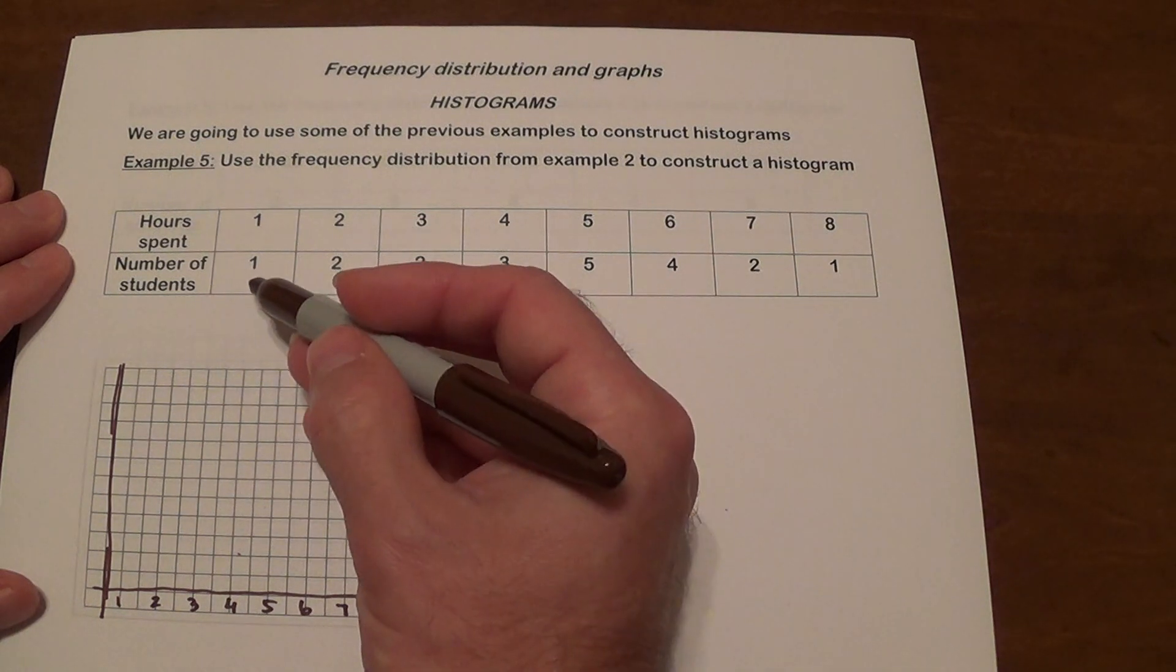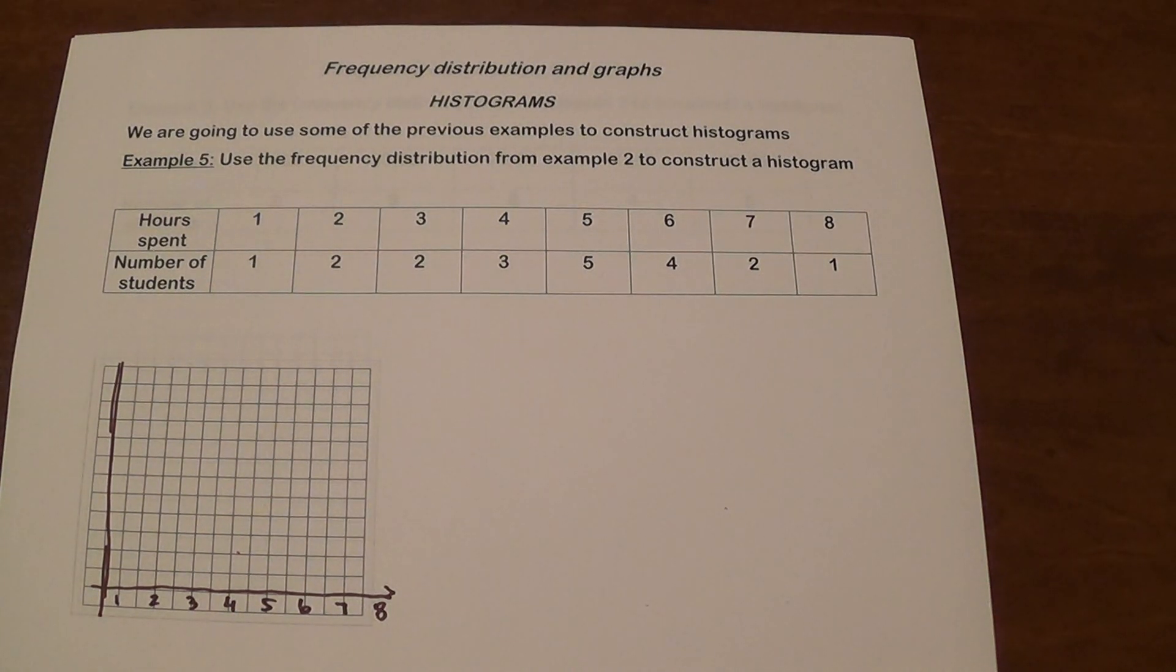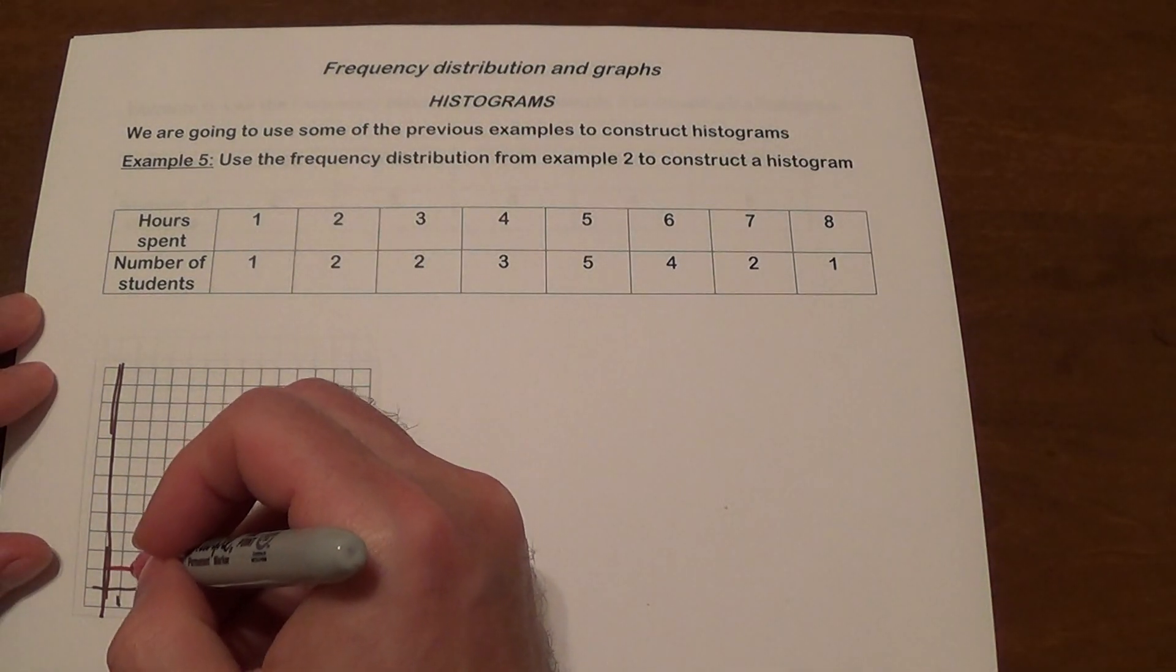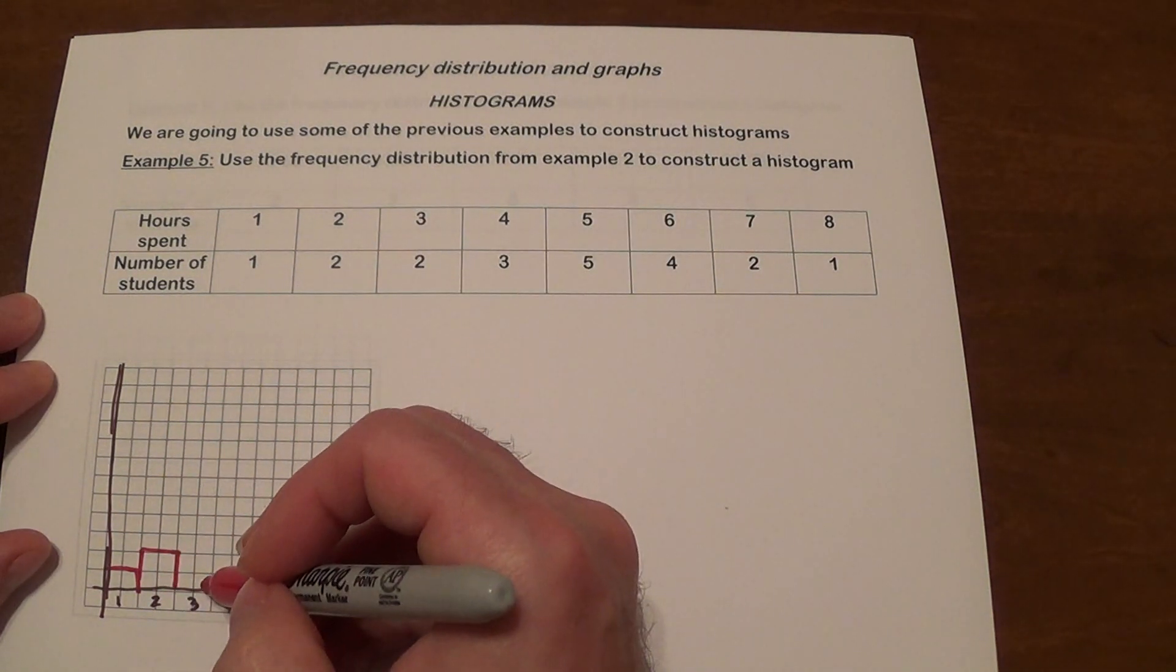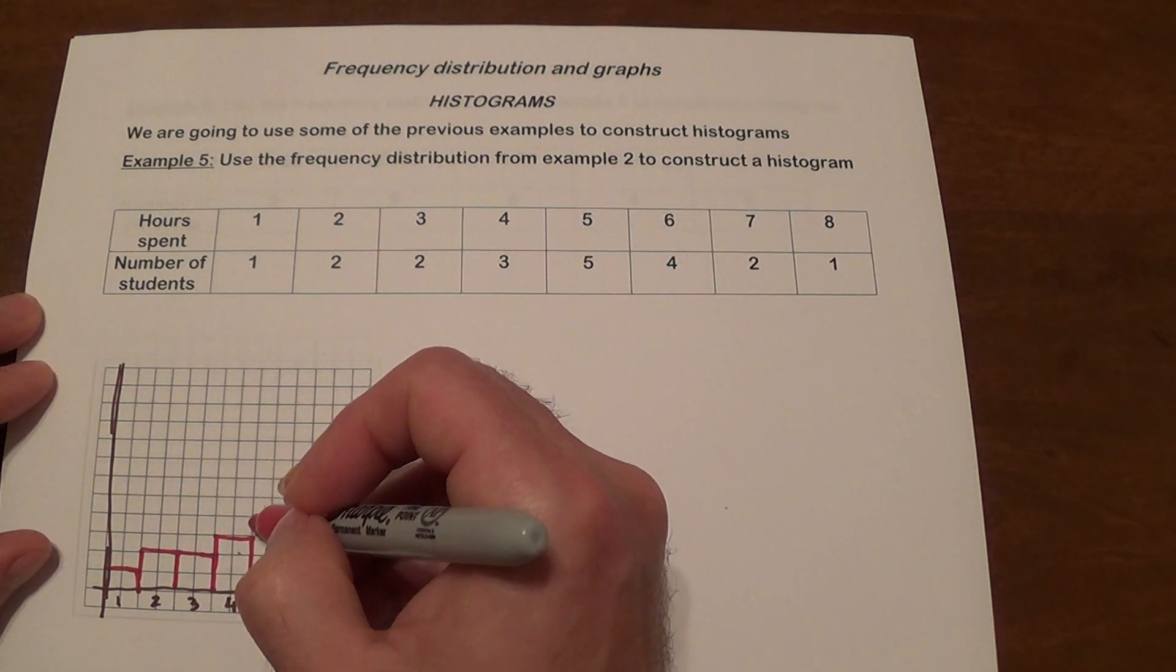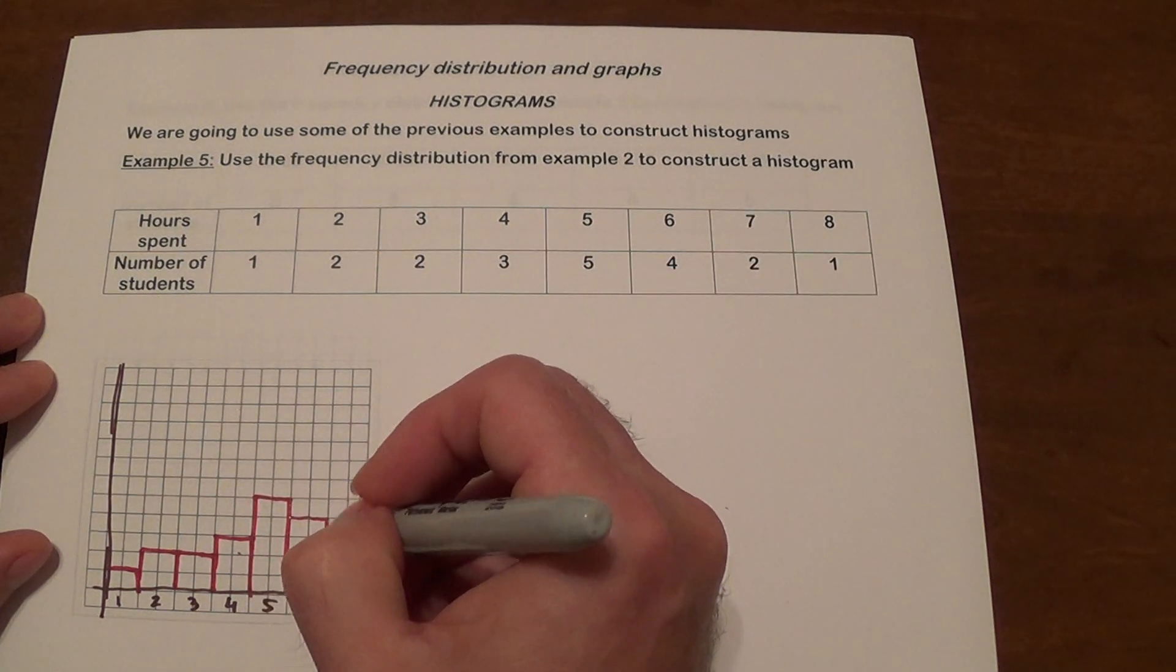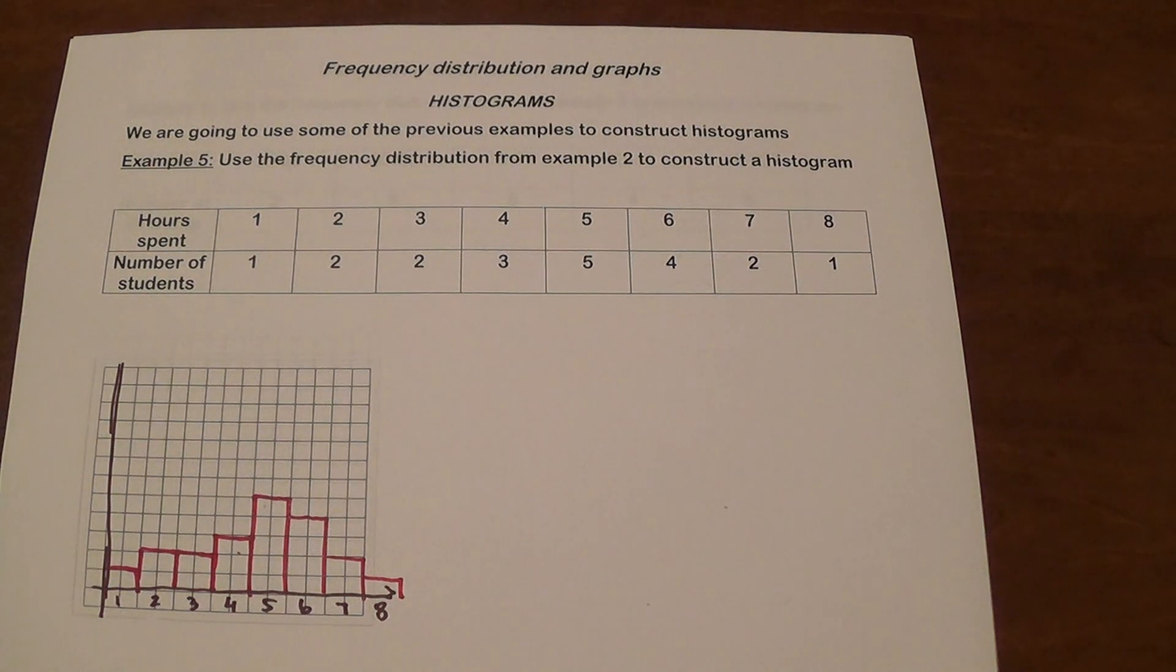And then we're going to go ahead and look at the number of students and we're going to make our bars that are going to be based on that frequency. So for 1 we have 1, so we're going to go 1 high. For 2 we have 2, so we're going to go 2 high. For 3 we have 2 also. For 4 we have 3. For 5 we have 5. For 6 we have 4. For 7 we have 2. And for 8 we have 1. And there is our histogram.